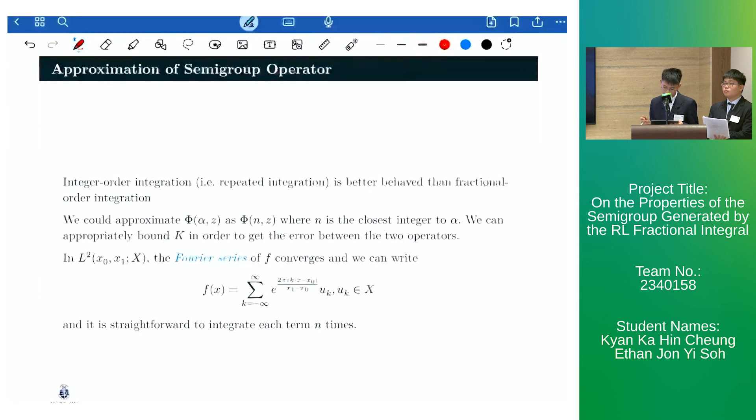We can then use the Fourier series of f in the L2-Bochner-Lebesgue space to see that it's straightforward to apply the approximated semigroup to f.